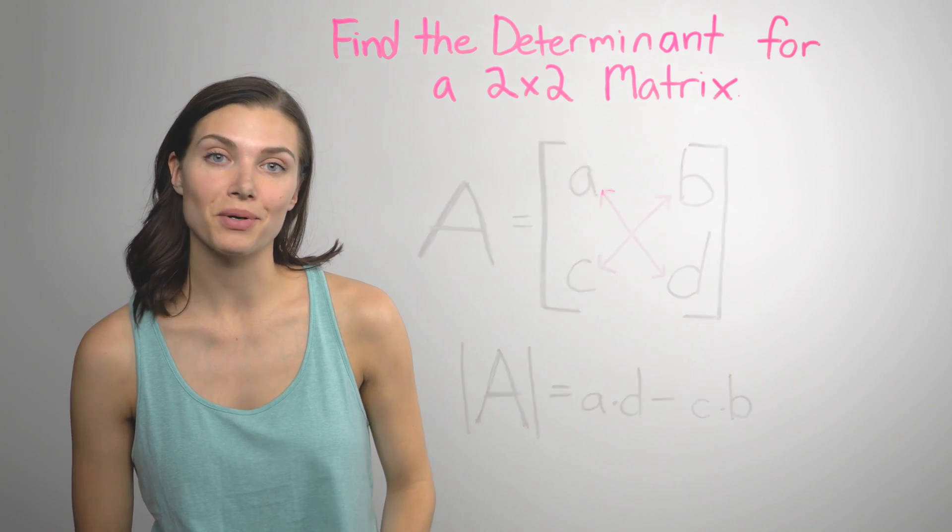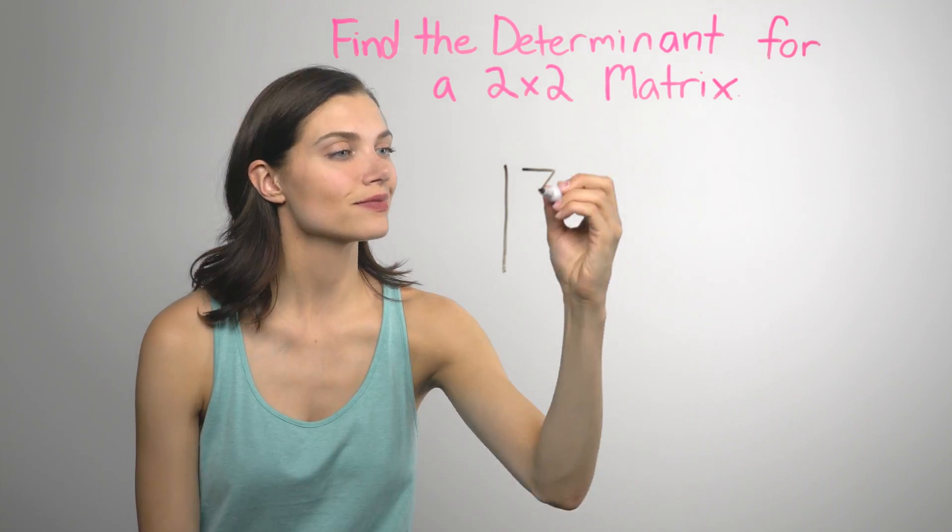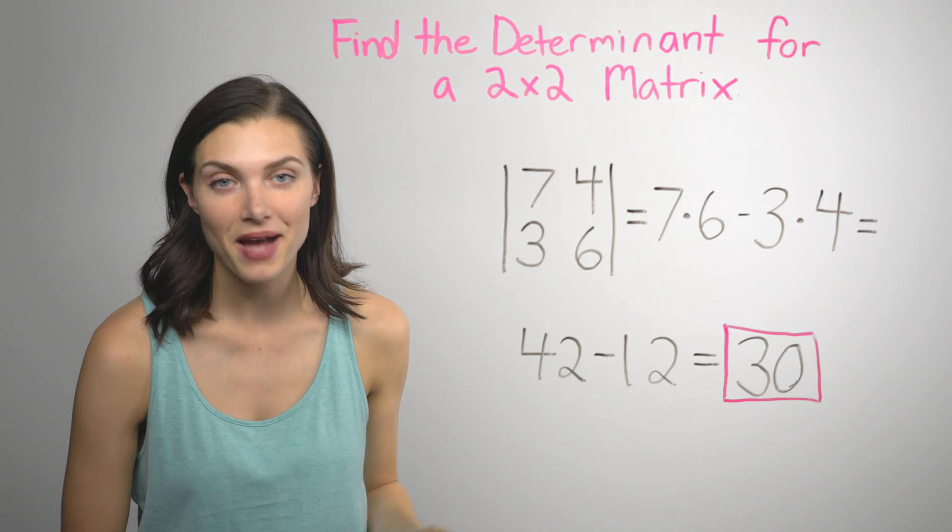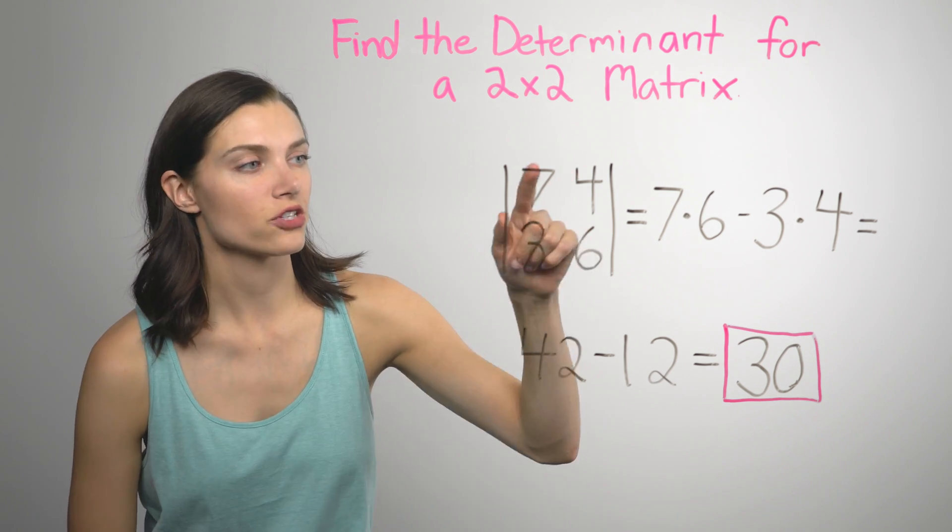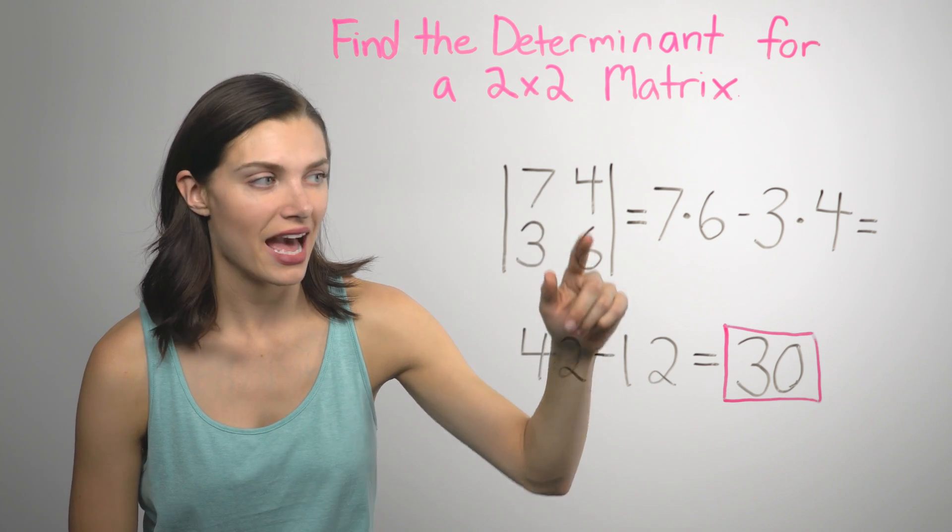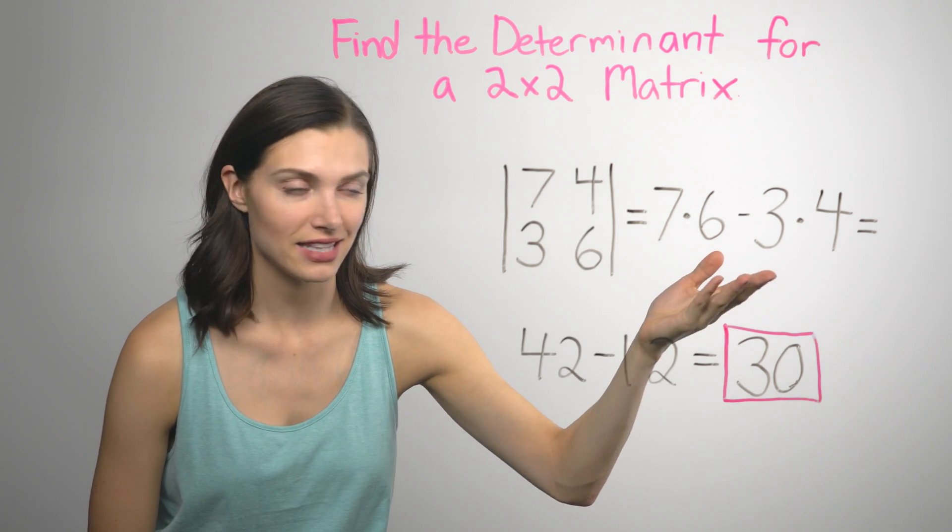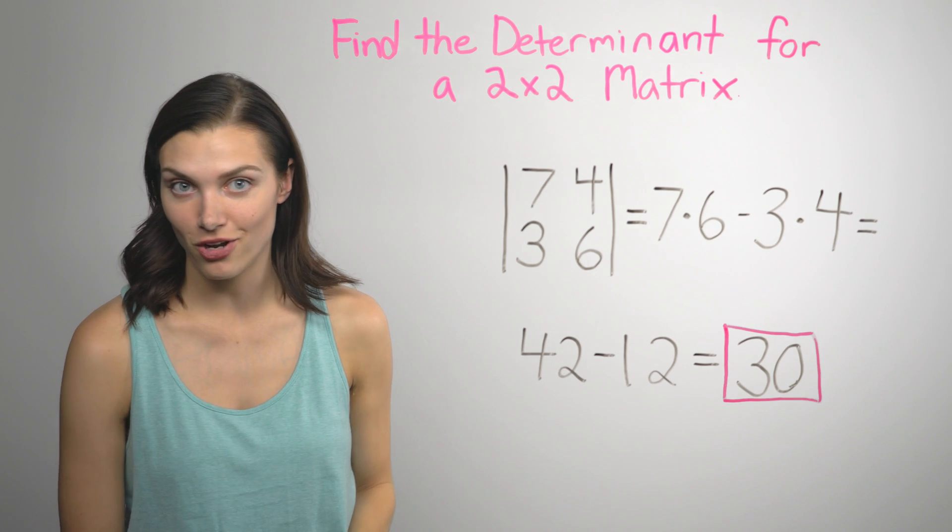So here's an example. The math here is really basic. You really just need to remember that you start in the top left, you multiply on the diagonals, and then subtract to get the answer. So how about a harder one?